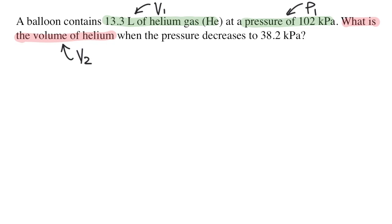Then, something changes. In this case, the pressure changes to 38.2 kilopascals. So I'm going to label it as P2. I already labeled V2, so now I know what everything means.